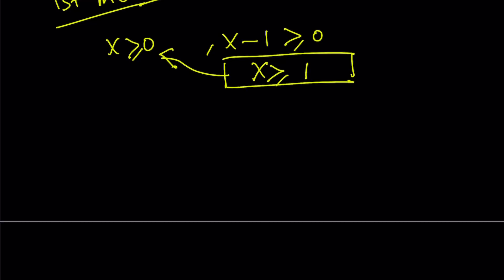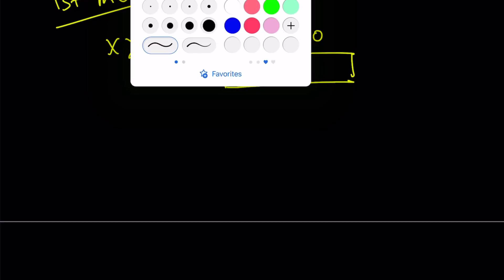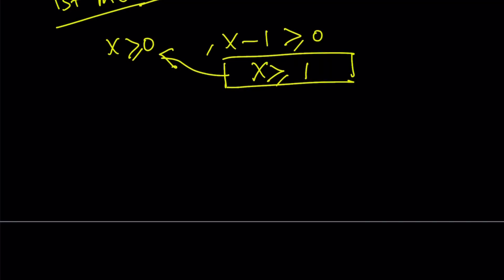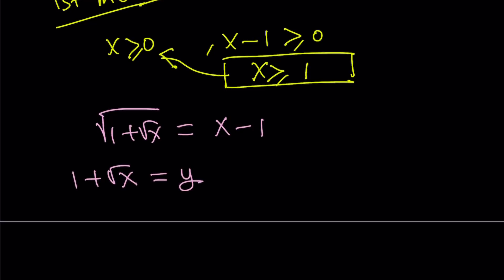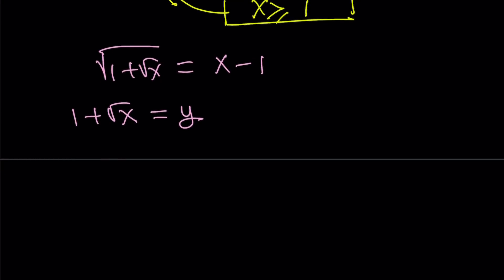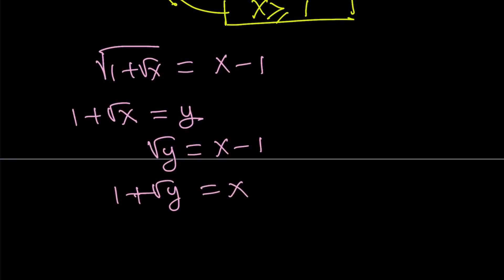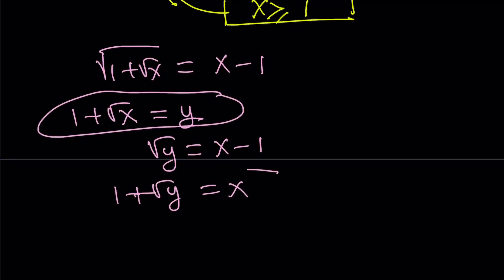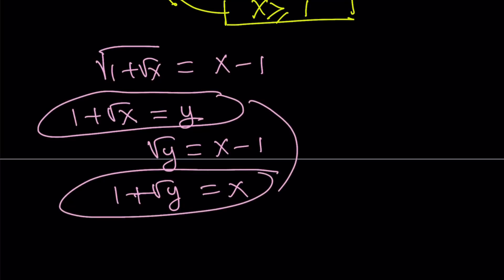The first method involves substitution. Why don't we call 1 plus square root of x as y? This is going to give us something nice. If I do that, I get square root of y equals x minus 1. Then adding 1 to both sides gives 1 plus square root of y equals x. Notice that this was our assumption and we got this equation — together, they make a nice system. That's why we did this.